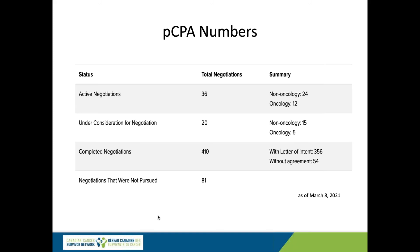Provinces can opt out of a PCPA negotiation at any time — at the engagement letter phase, during negotiations, or even at the LOI signing stage. When a province opts out, patients in that province could be without access to that treatment on their public formulary, potentially forever. There are 54 completed negotiations without an agreement, meaning negotiations concluded but no letter of intent was reached, sometimes because PCPA simply chose to end discussions.